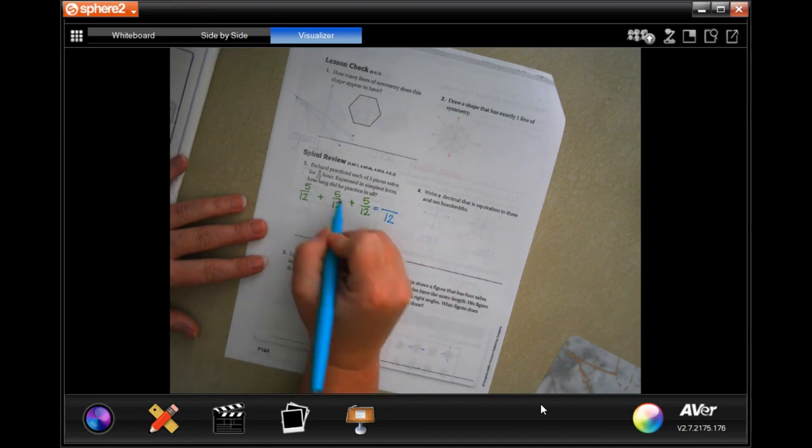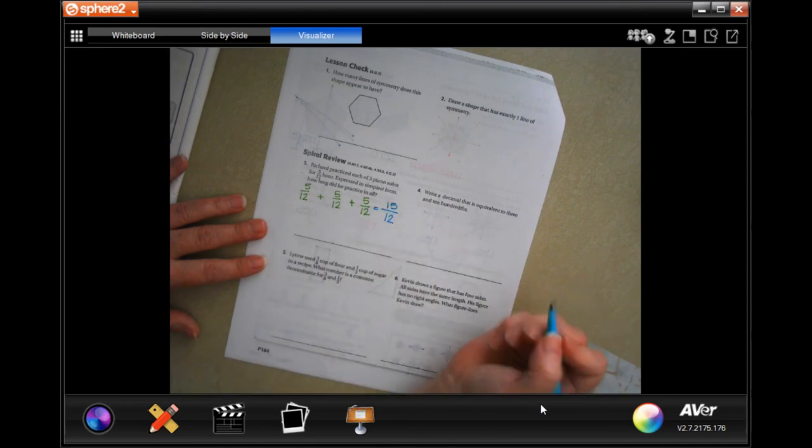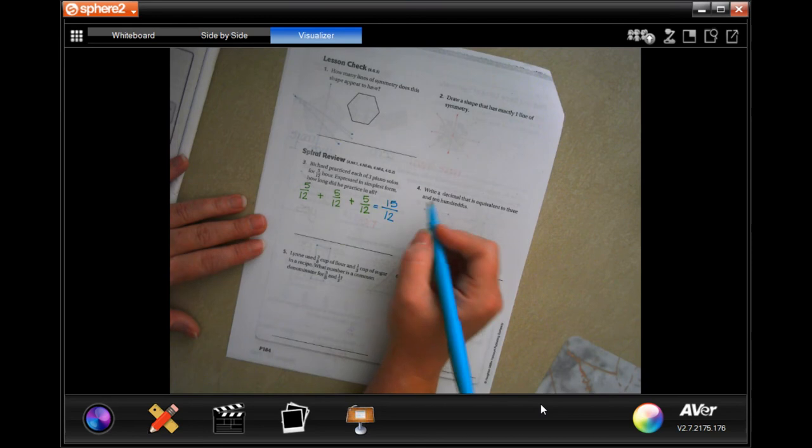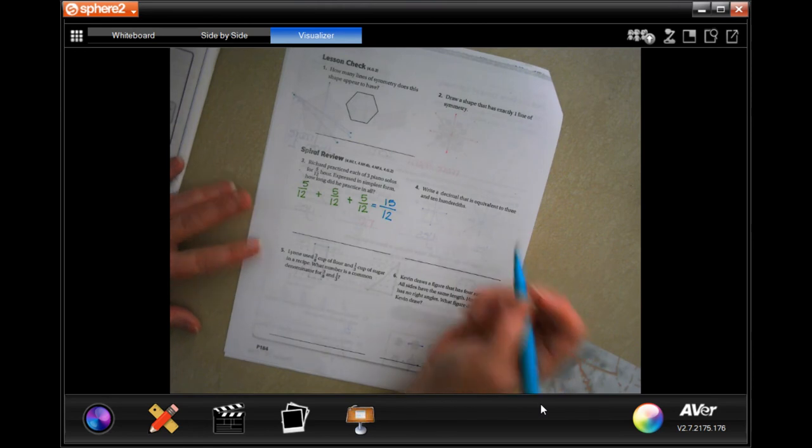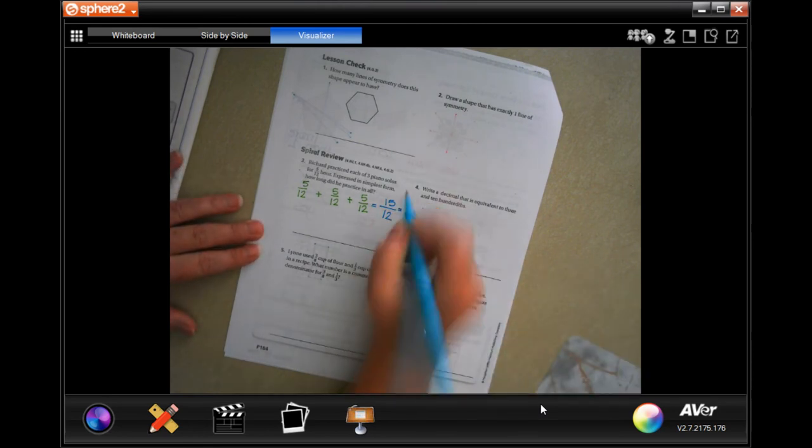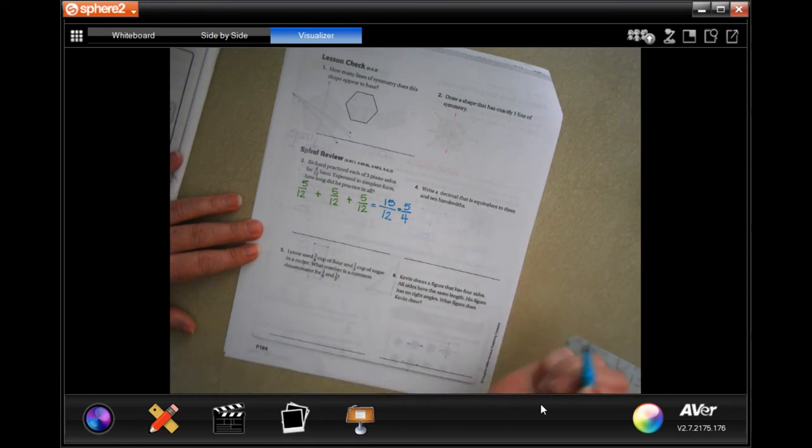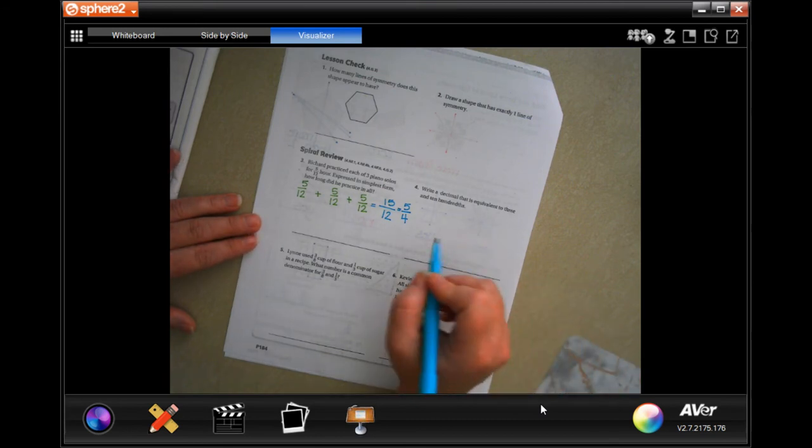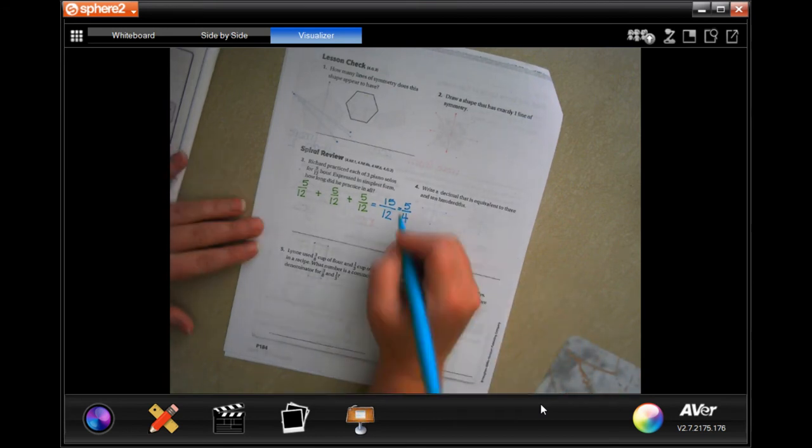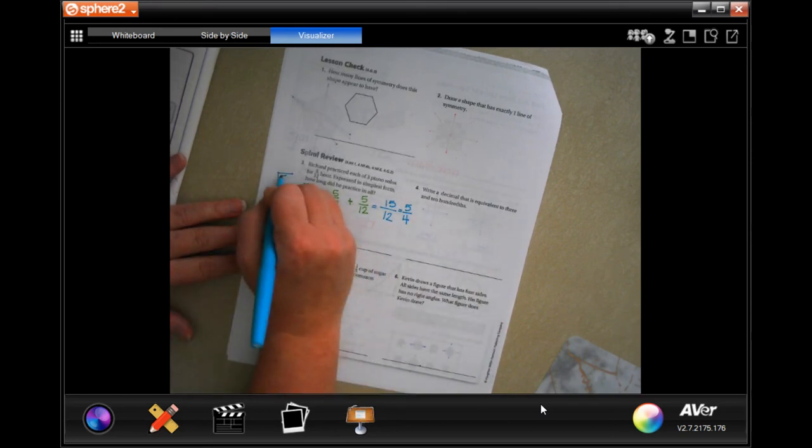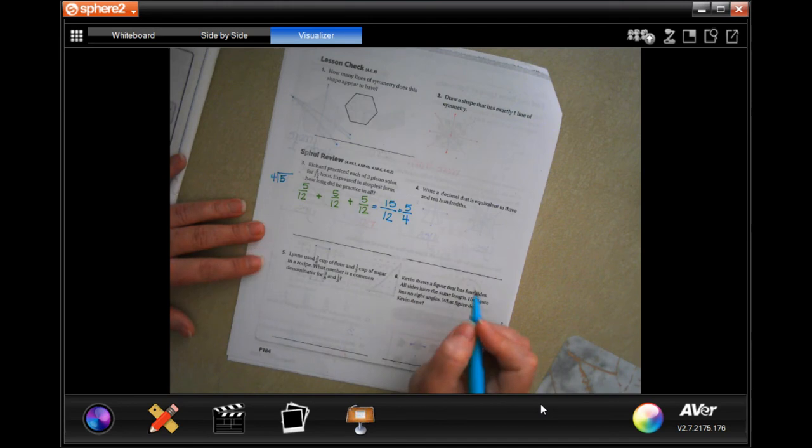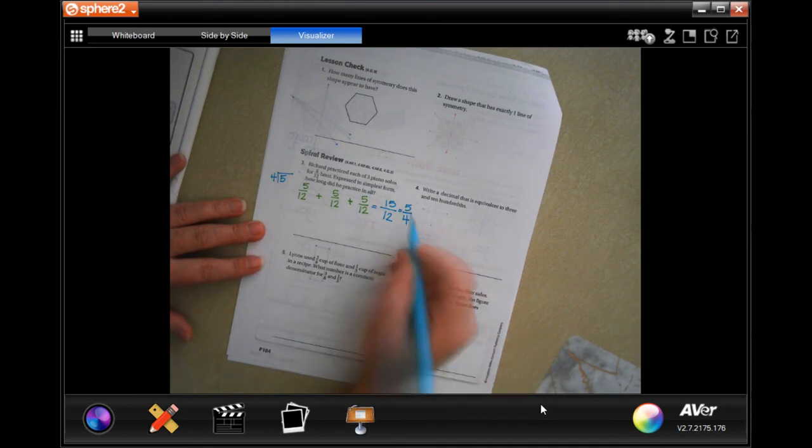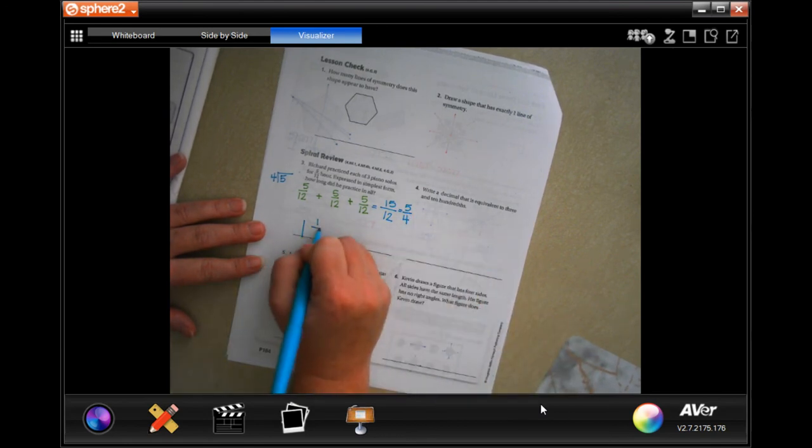All right, there we go. Now, the denominator stays the same and then we just add the top. Well, 5 plus 5 plus 5 is 15. Here's the thing, we can reduce 15/12 by 3. So if we divide 15 by 3 we get 5, and if we divide 12 by 3 we get 4. That's still not simplest form though because the top is bigger than the bottom. Four goes into five one time, one times four is four. So 5 minus 4 is 1, and I keep my denominator: 1 and 1/4 hours.